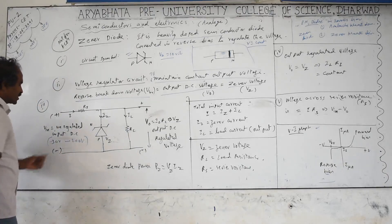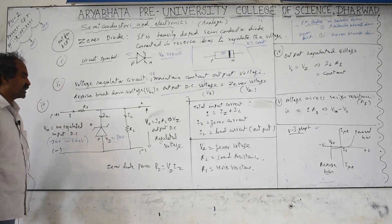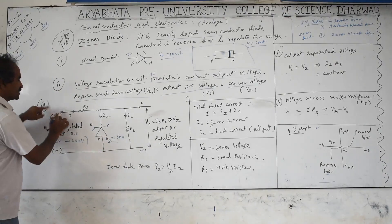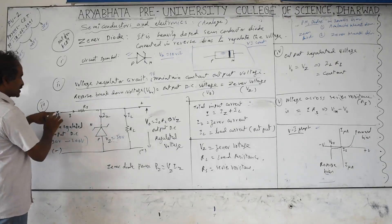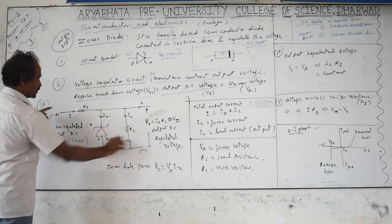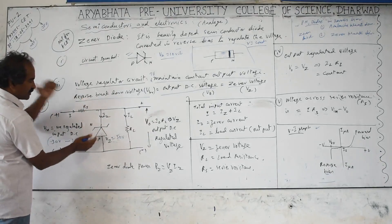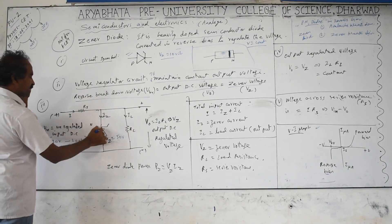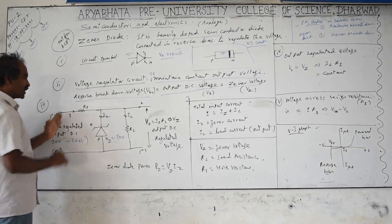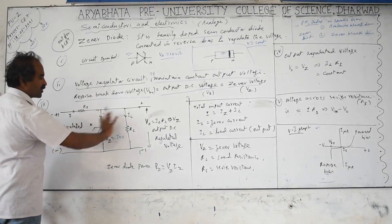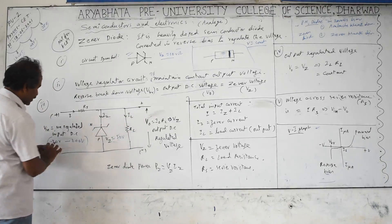...you choose a Zener diode with breakdown voltage Vz = 50 volts and connect it in reverse bias. The input is DC: connect the plus side to the N-side and minus side to the P-side. Whenever the input voltage exceeds Vz, the output voltage remains constant. The input voltage must always be chosen to be greater than Vz for regulation to work.